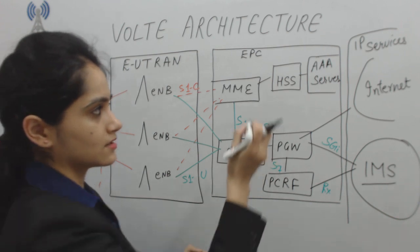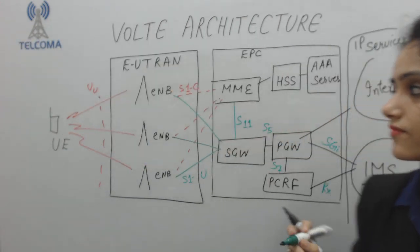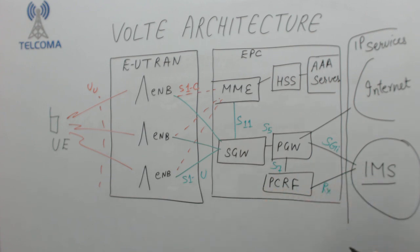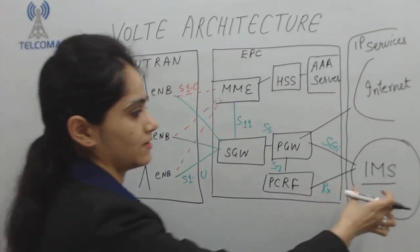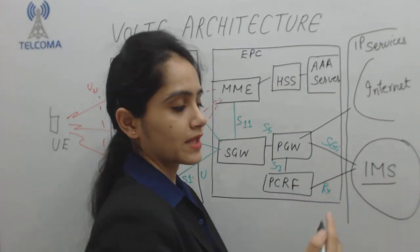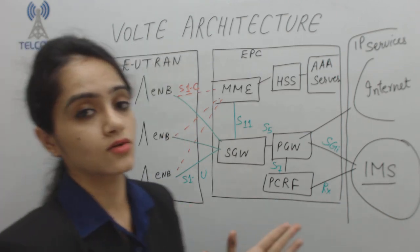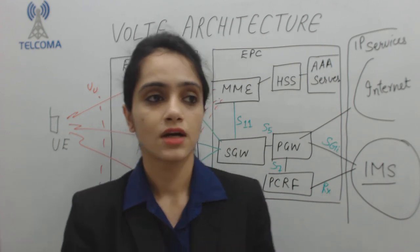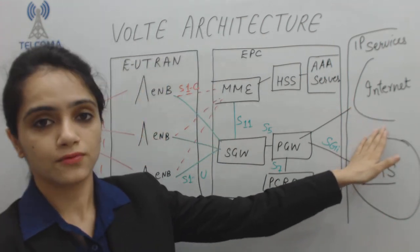These are the interfaces defining how the entities are connected to one another — the connectivity of the Evolved Packet Core to the IMS system, which is the IP Multimedia Subsystem. This describes how the entities are organized for VoLTE in a phone network.